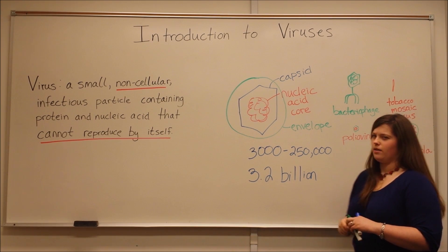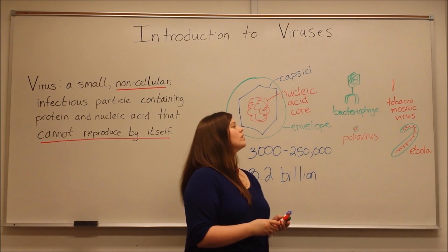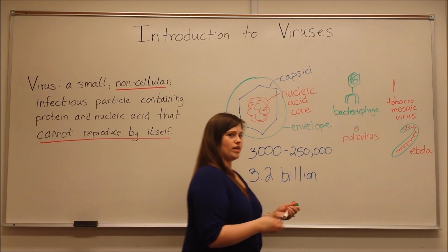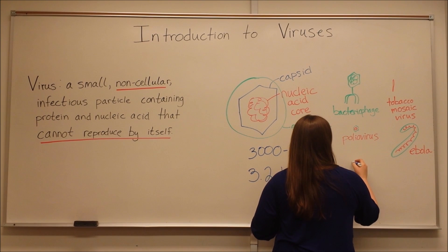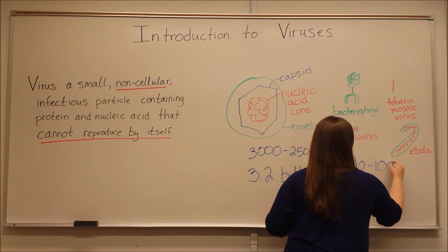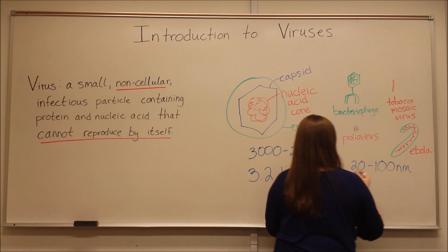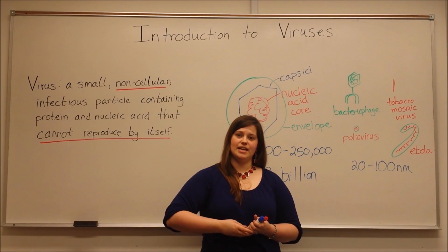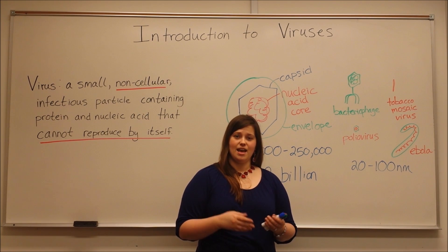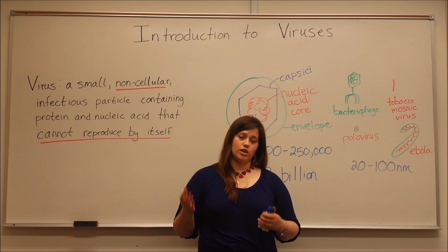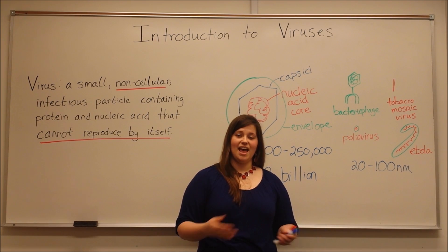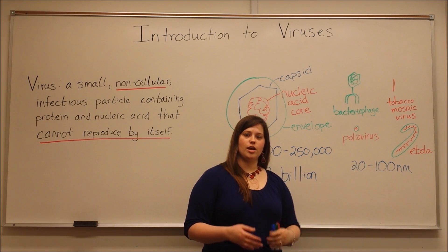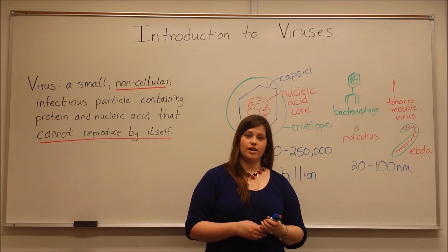Also important to think about is the size of these viruses. Now viruses are typically 20 to 100 nanometers in size. This is quite small when you think that the average bacterial cell is upwards of 1,000 nanometers, and the average animal cell or human cells are upwards of 10,000 nanometers. So you can see how small these structures are compared to the host cells that they are infecting.